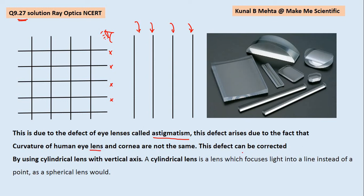This can be corrected with the help of cylindrical lenses. Cylindrical lenses are those lenses which have different focal lengths along the x-axis and y-axis. These lenses focus light into a line instead of a point. This is the answer to our problem, and these are some of the cylindrical lenses shown in the picture.